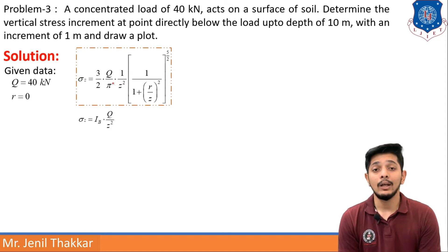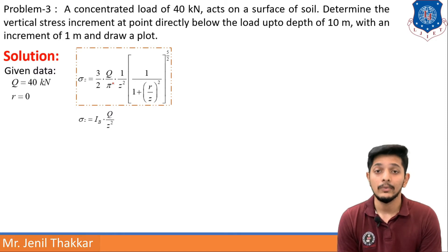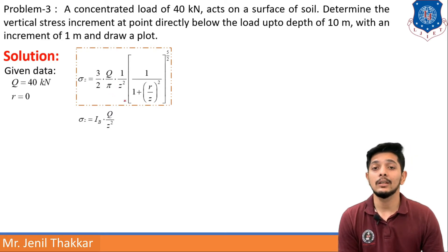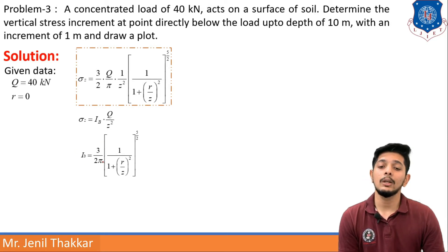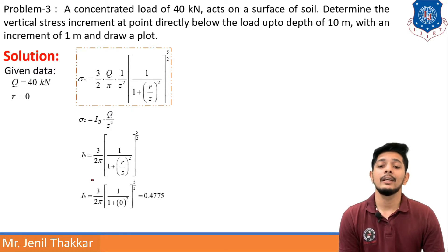Whenever we need to find out stress in increments of 1 meter or whatever meters are given, you have to use the formula σz = Ib × Q/z² because it will be easier to calculate. Putting the Ib equation as (3/2π) × [1/(1 + (r/z)²)]^(5/2), and substituting r = 0, I get Ib equal to 0.475.